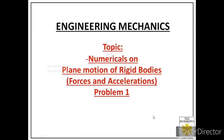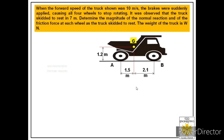Welcome students. Today we will solve the first problem on the topic of plane motion of rigid bodies, forces and accelerations. We are given the following statement: when the forward speed of the truck shown was 10 meters per second, the brakes were suddenly applied causing all four wheels to stop rotating. It was observed that the truck skidded to rest in seven meters. Determine the magnitude of the normal reaction and friction force at each wheel as the truck skidded to rest.